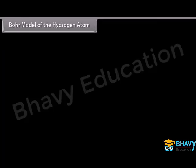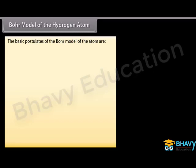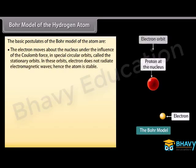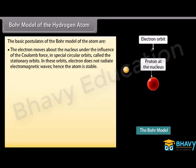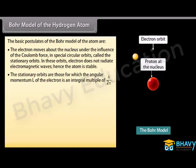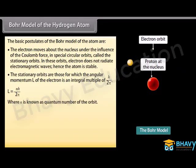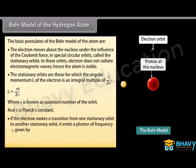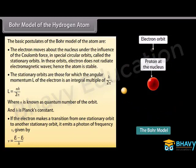Bohr's model of the hydrogen atom: The basic postulates are: the electron moves about the nucleus under the influence of the Coulomb force in special circular orbits called stationary orbits; in these orbits the electron does not radiate electromagnetic waves and the atom is stable. The stationary orbits are those for which the angular momentum L of the electron is an integral multiple of h/2π: L = nh/2π, where n is the quantum number and h is Planck's constant. If the electron transitions from one stationary orbit to another, it emits a photon of frequency ν = (E_i − E_f)/h.